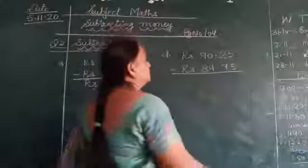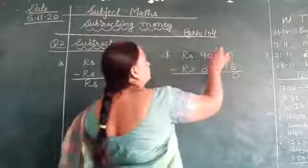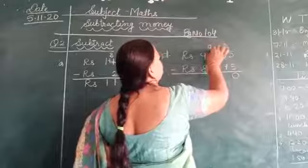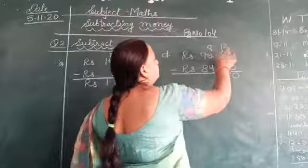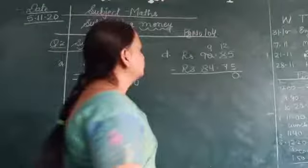Whenever we subtract numbers, we always get borrowing. 2 is lesser than 7, so we have to make this 12. And the number next to it will become 9. So when we minus 7 from 12, we will get 5.